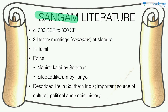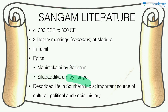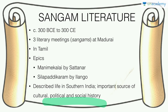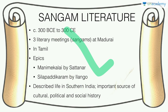Sangam literature is called so because it was consolidated at three literary meetings or Sangams in Madurai. It is written in Tamil and has two epics: Manimegalai by Sattanar and Silappadikaram by Ilango. This literature describes life in Southern India and is a very important source of cultural, political, and social history of those times. It's not a very high-yield topic — at most one question will come — but you should know a little bit about it, including its basic facts.